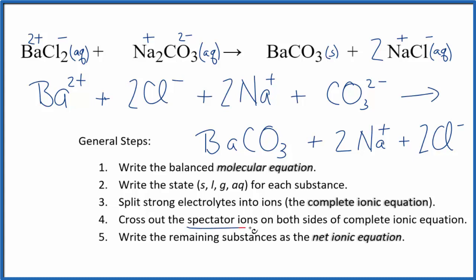Now we can cross out spectator ions. These are ions that are on both sides. They're in the reactants and in the products. Essentially, they haven't changed. So we're not really interested in those. Have 2 Cl- here and 2 Cl- here. Cross them out. Two sodium ions in the reactants and two in the products. We cross those out. And that leaves us with the net ionic equation.